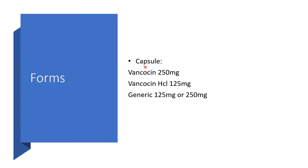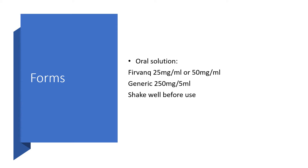Other forms include capsules: the brand Vancomycin at 250 mg, Vancocin Hydrochloride 125 mg, or Vancomycin 125 mg or 250 mg. It could also be a solution — 25 mg per ml or 50 mg per ml, generally 250 mg per 5 ml. Shake well before use.